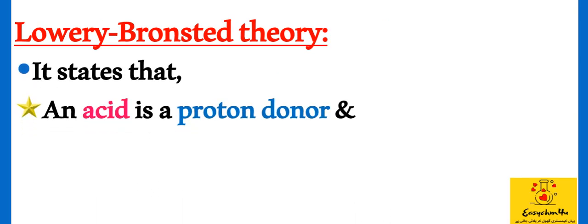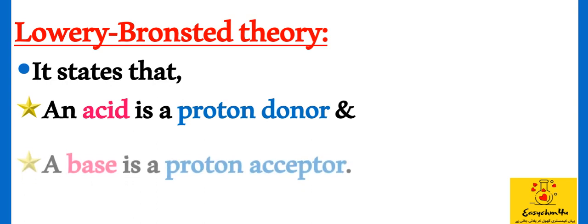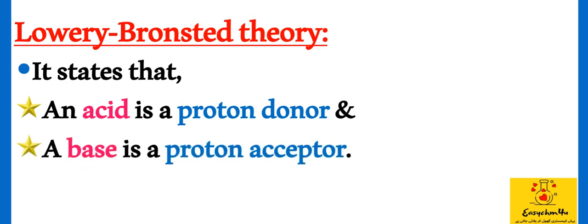Let's see what is the definition of this theory. It states that an acid is a proton donor and a base is a proton acceptor. So students, this is a very simple definition, but from examination point of view, this is very important. And this is a 3 marks question: Define Lowery-Bronsted acid or Lowery-Bronsted base along with examples. So you have to quote it through examples and attempt it in the paper.